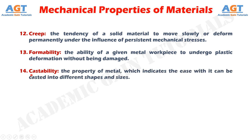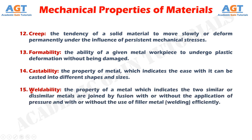Castability. Castability is defined as the property of metal which indicates the ease with which it can be cast into different shapes and sizes. Cast iron, aluminium and brass possess good castability. Weldability. Weldability is defined as the property of a metal which indicates how two similar or dissimilar metals are joined by fusion with or without the application of pressure and with or without the use of filler metal, efficiently. Metals having weldability in descending order are iron, steel, cast steels and stainless steels.